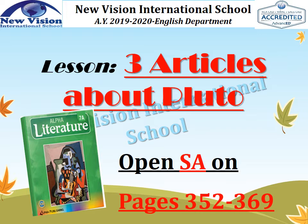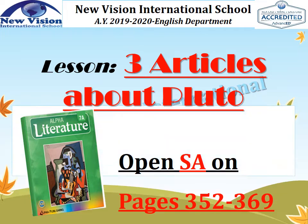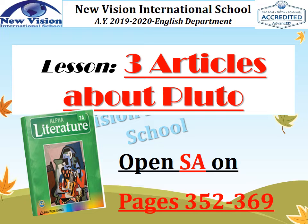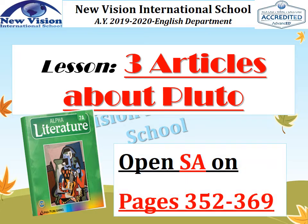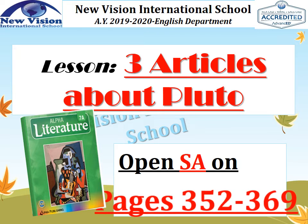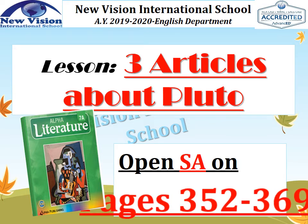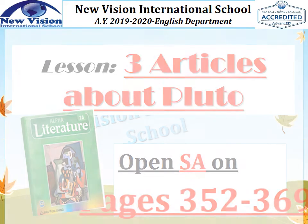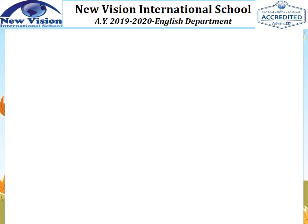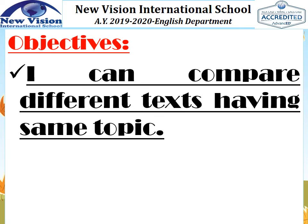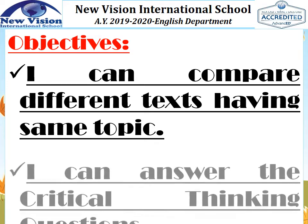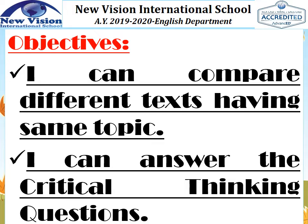Now, Grade 7, we are going to have another selection. But this time, our lesson will be about three different articles about Pluto. Are you ready? Alright, here we go. Open your student anthology on pages 352 until 369. Our goals or objectives for today: I can compare different texts having the same topic, and I can answer the critical thinking questions. Let's start!